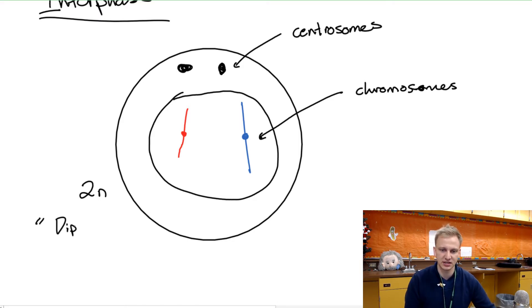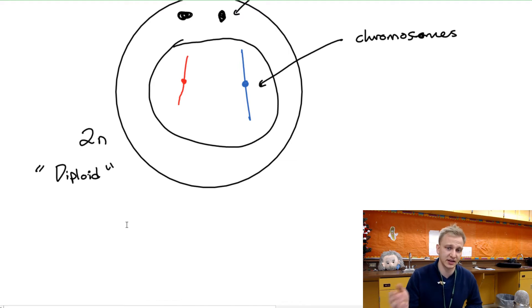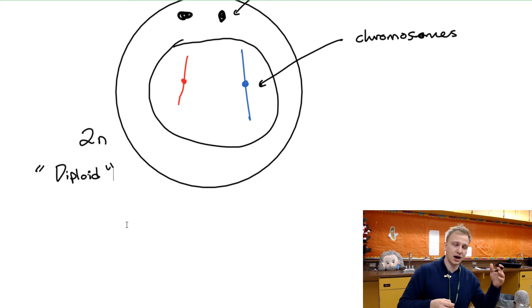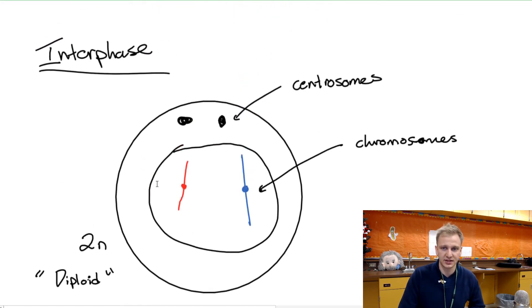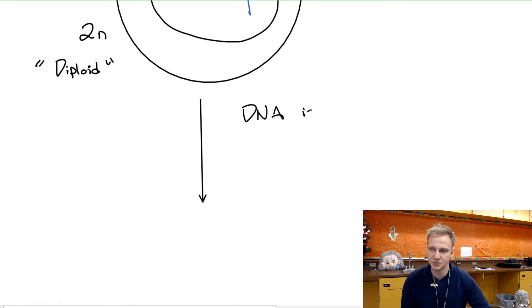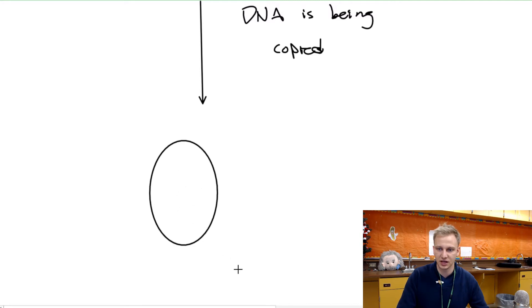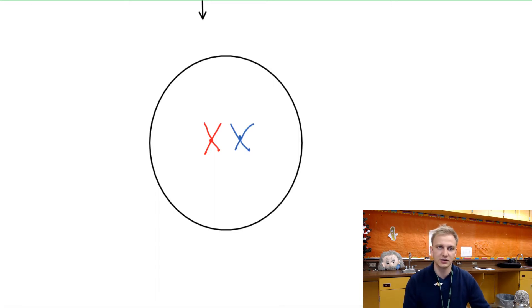A diploid cell has all of the necessary genetic material to create a living, functioning human being. The goal is to move from 2n cells into just n cells — the sex cells — which need to combine with another sex cell to form a diploid cell. We'll eventually create a haploid cell, which is a 1n cell. Throughout interphase, DNA is being copied, and after that we'll have a new cell with both the red and blue chromosomes duplicated.